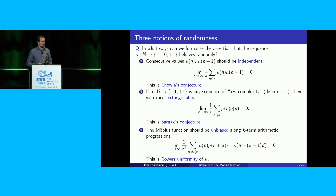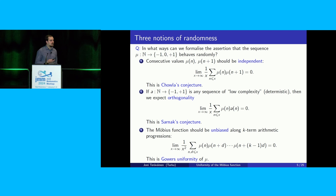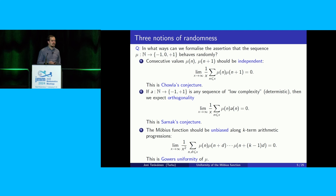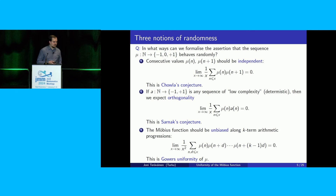The third notion of randomness concerns the Möbius function along linear patterns. You look at k-term arithmetic progressions weighted by the Möbius function, and you take the average of the Möbius function along these k-term progressions — that should converge to 0. This is saying that the Möbius function is unbiased along arithmetic progressions, and is known as the Gowers uniformity of the Möbius function.